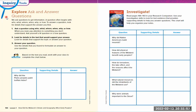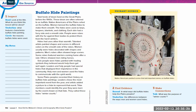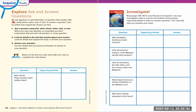For the next page, we're going to practice ask-and-answer questions. We ask questions to get information — a question often begins with who, what, when, where, why, or how. To answer a question, look for details that support the answer. When you read, pay attention to something you don't understand and ask yourself a W question or a how question. Don't just collect details — ask yourself why they are doing this. Then look for details in the text that support your answer, and use those details to formulate, meaning create, an answer to your question.